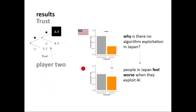The question of why there is no algorithm exploitation in Japan — it seems that one explanation is that people in Japan feel worse in general when they exploit artificial agents compared to people in the USA. That's where we are at the moment; we're still analyzing results and there are a few additional checks we want to do, but that's what we've got so far.